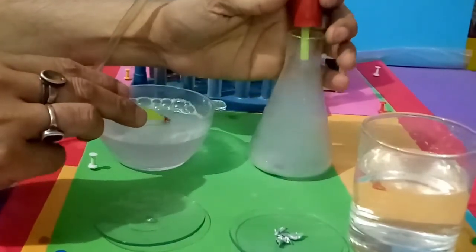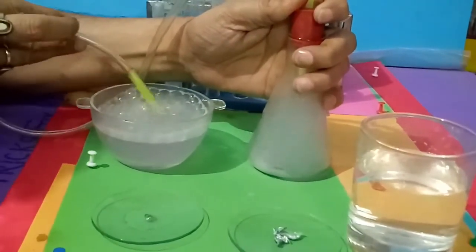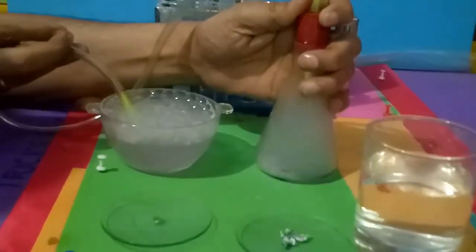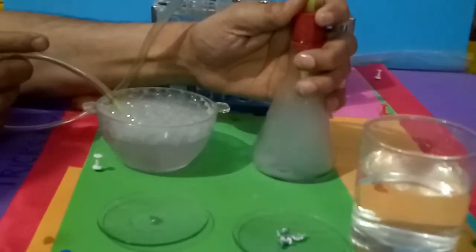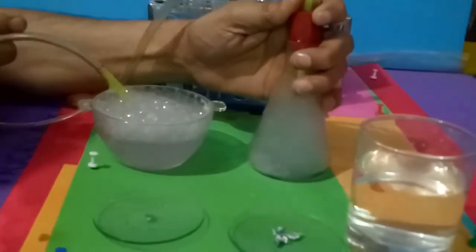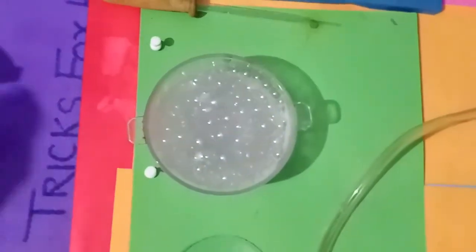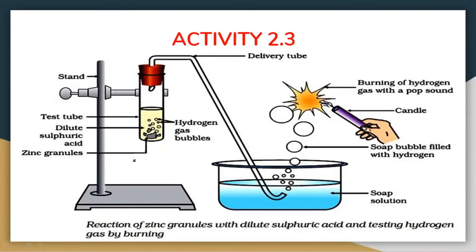Here you can see in the soap solution, a large amount of air bubbles are formed. These air bubbles are of a colorless gas. Let's see which type of colorless gas it is. For this, we are going to do a confirmatory test — we are going to take a burning matchstick near it and see what happens. The gases explode with a pop sound.